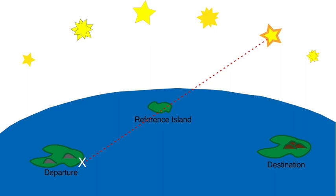The navigator first takes a bearing, orienting to a distant star and a reference landmark, for example, an island that can be seen or imagined. The navigator then travels, performing egocentric path integration until the current position lines up with the reference island and another star.